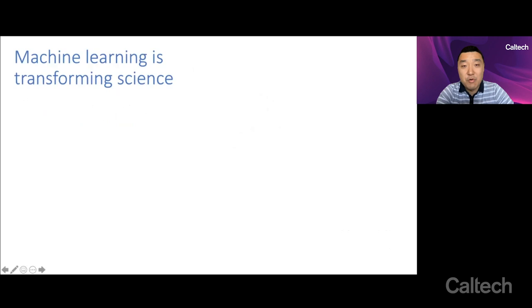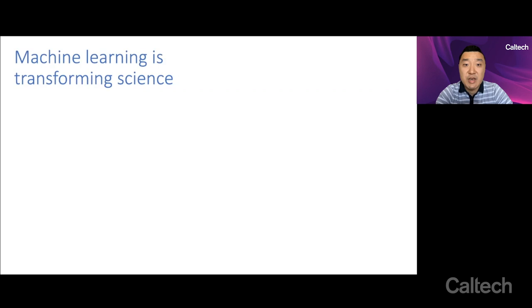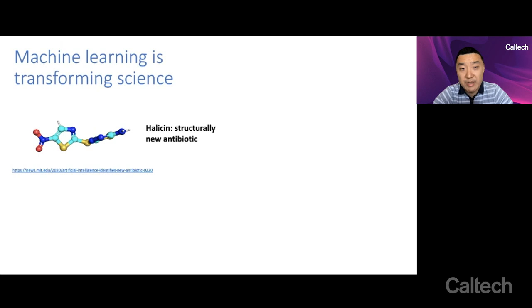Machine learning, as we all know, is in the process of transforming the way that we do science. Recently, a machine learning approach was instrumental in discovering a structurally new antibiotic called halicine, which may hopefully one day become very useful for tackling various bacteria that have become resistant to our existing antibiotic families.